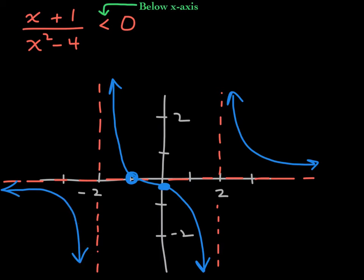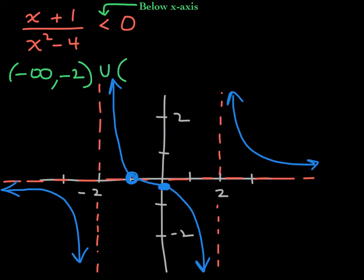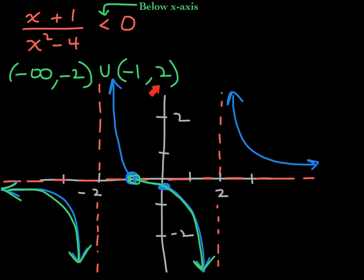It's also below the x-axis from negative 1 all the way to positive 2. Not the portion above the x-axis. So the answer in interval notation would be from negative infinity to negative 2, parenthesis, union from negative 1 to positive 2. It'll be from negative infinity all the way to negative 2, and then again from negative 1 to positive 2. We have parentheses on all of our endpoints because the inequality is strict. That's the answer to the question.